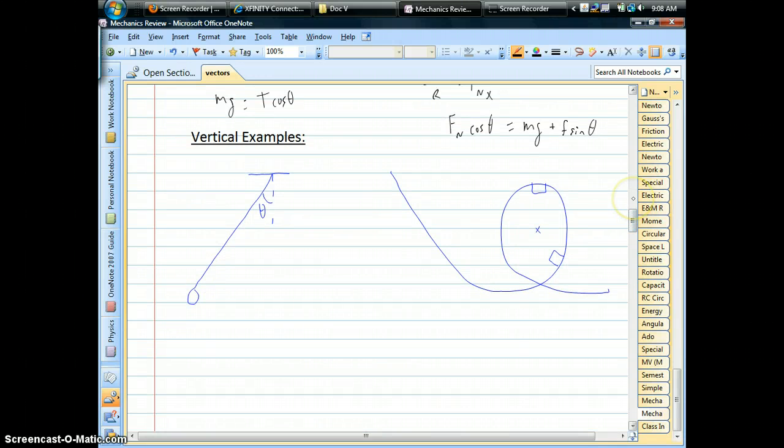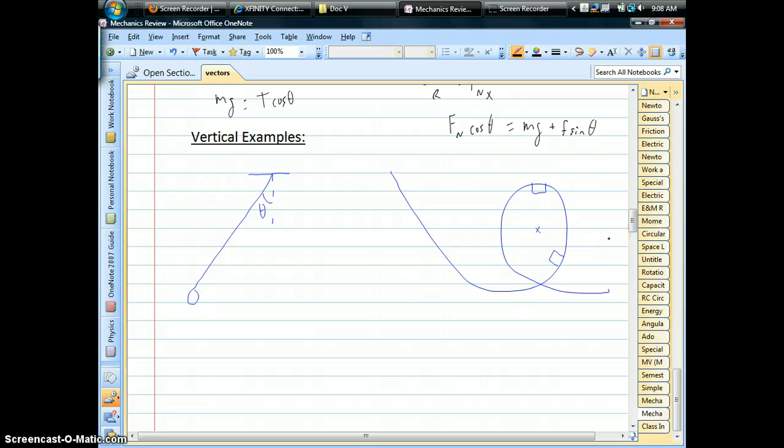Now let's switch over to the vertical examples. Something like a swing or a pendulum, a loop-de-loop on a roller coaster, things like this. And let's see how that works.